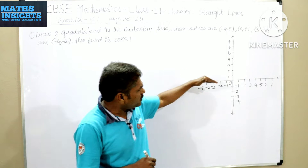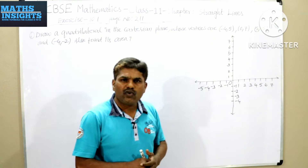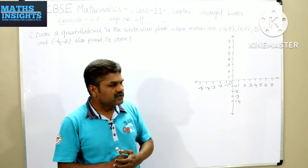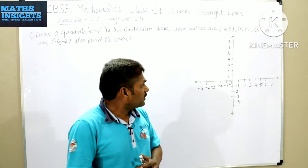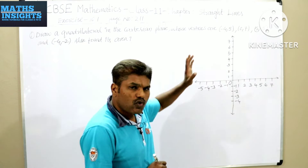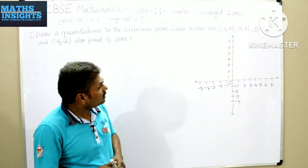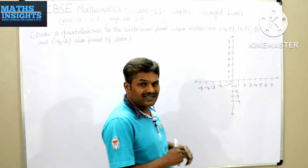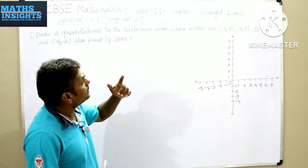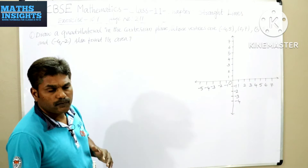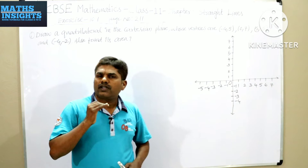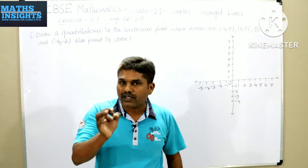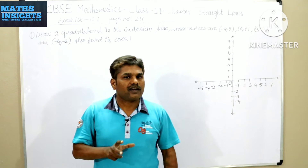Similarly, the upward area of the x-axis is called positive y and the downward area is called negative y. If you observe the vertices of the quadrilateral, the minimum value on the x-axis is minus 4 and the maximum value is 5. So there is no problem — you can show those values on the graph paper without changing the scale.